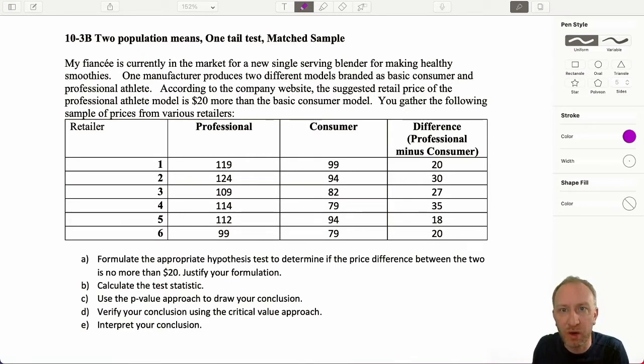Here we're looking at, oh this is a true story. My fiance is currently in the market for a new single serving blender for making healthy smoothies. One manufacturer produces two different models, branded as a basic consumer model and the professional athlete model. According to the company website, the suggested retail price of the professional athlete model is $20 more than the basic consumer model. Here we gather the following data. This again is a matched sample because I have two data points for each of my experimental units.